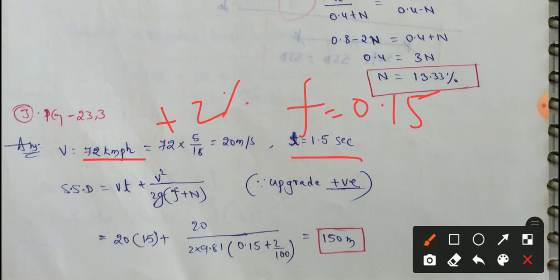We will find the SSD value. The SSD formula is: Vt plus V squared by 2g(f plus n), where plus n equals the gradient value. For a downward gradient, minus n is used in the formula.